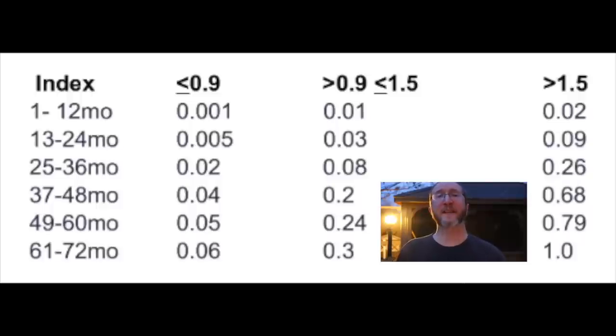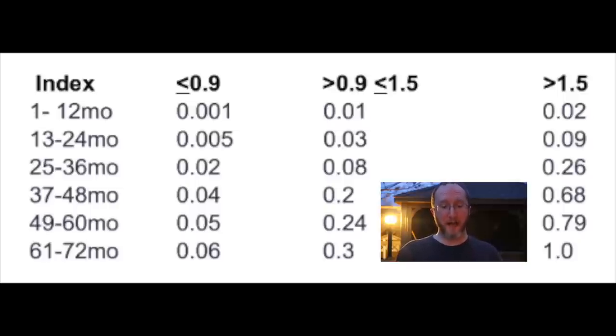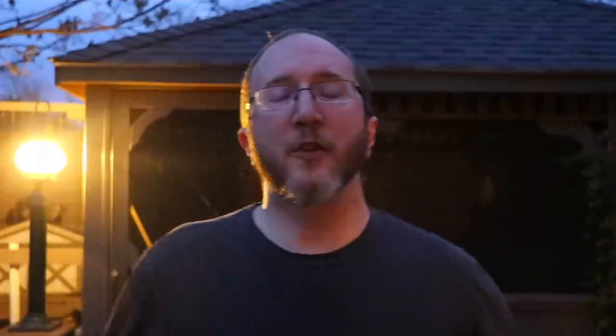Now let's take the riskiest scenario: a patient who has not had chemo, has been on Tysabri for 72 months, and has a high titer above 1.5. We look at the last row and go all the way to the right, and we see that risk is 1.0 — or 1%. One of the points I want to convey is the importance of keeping the risk of PML in the context of the risk of the disease. The range on this table goes from a thousandth of a percent all the way up to 1% total. Patients often think of a yes-no binary — either they're going to get PML or they're not — and as you can see in the table, that's not really the way this works.